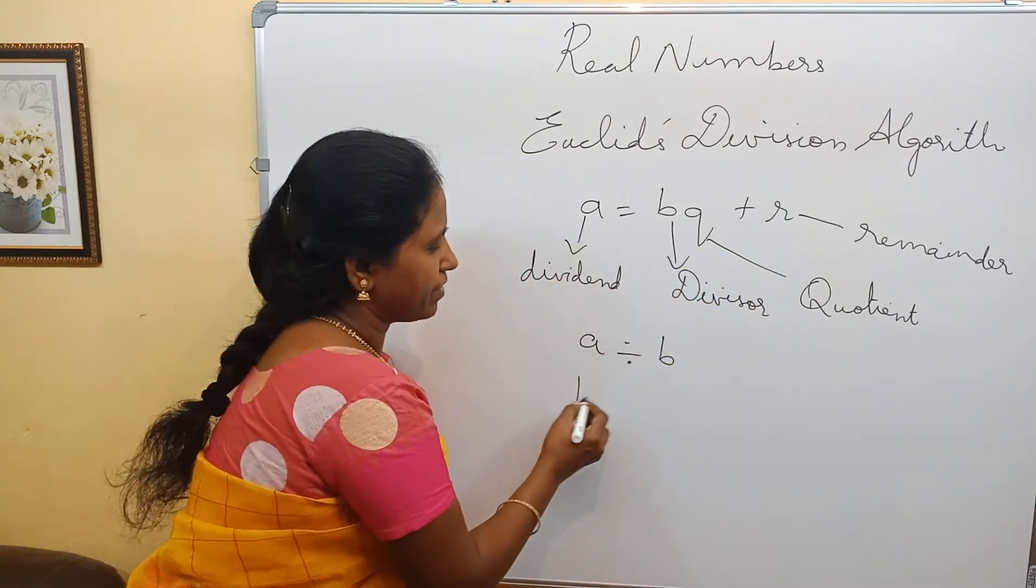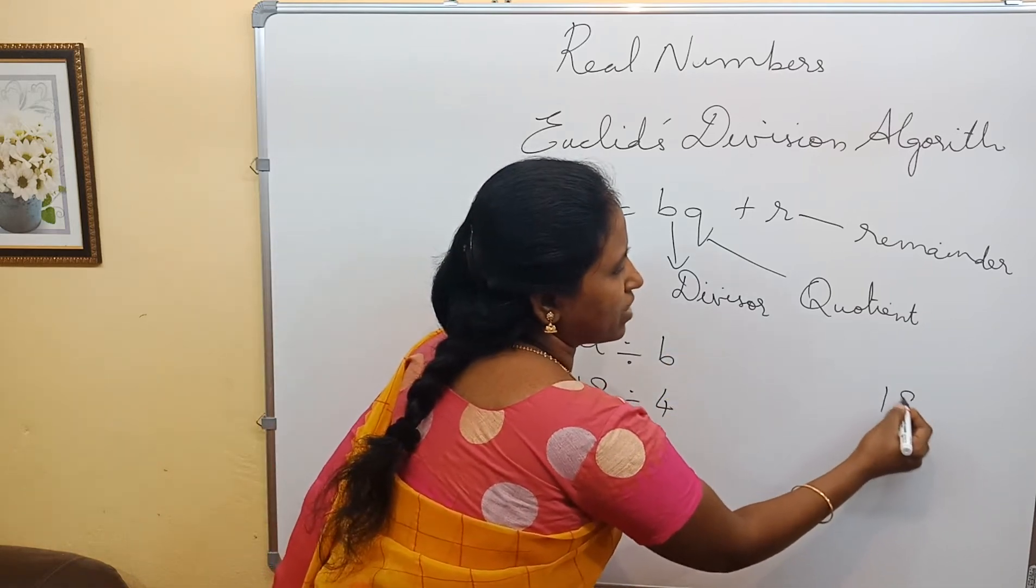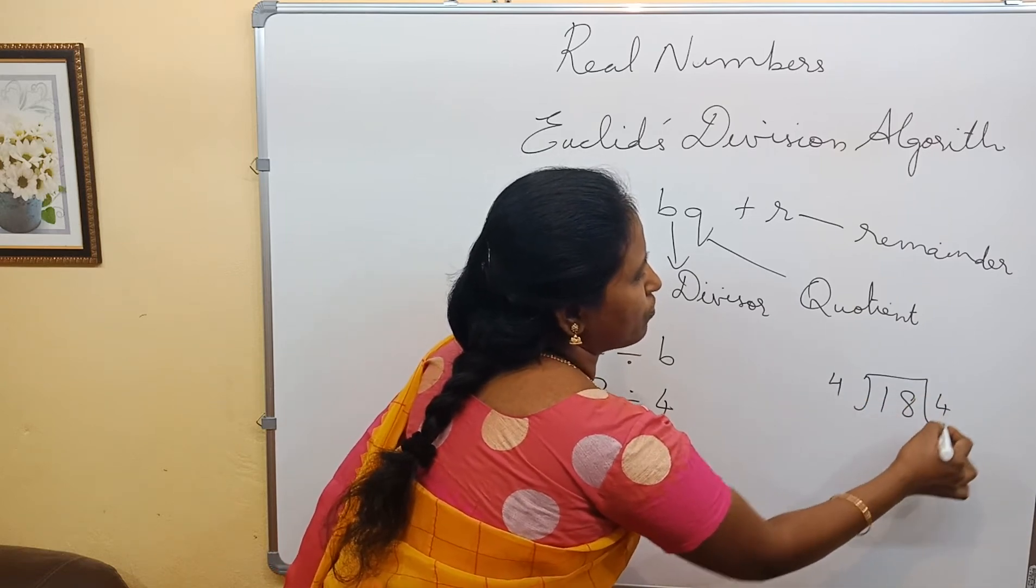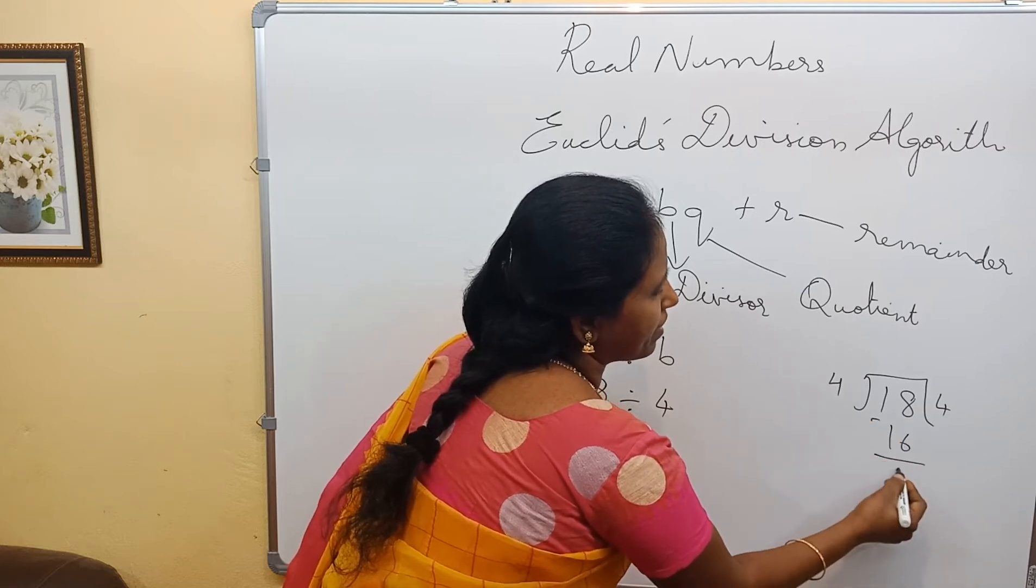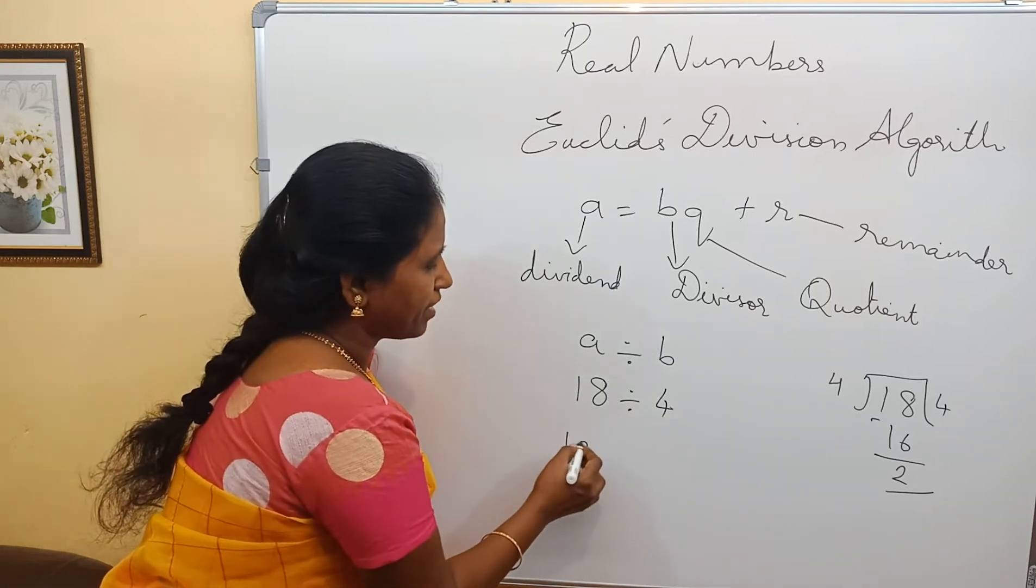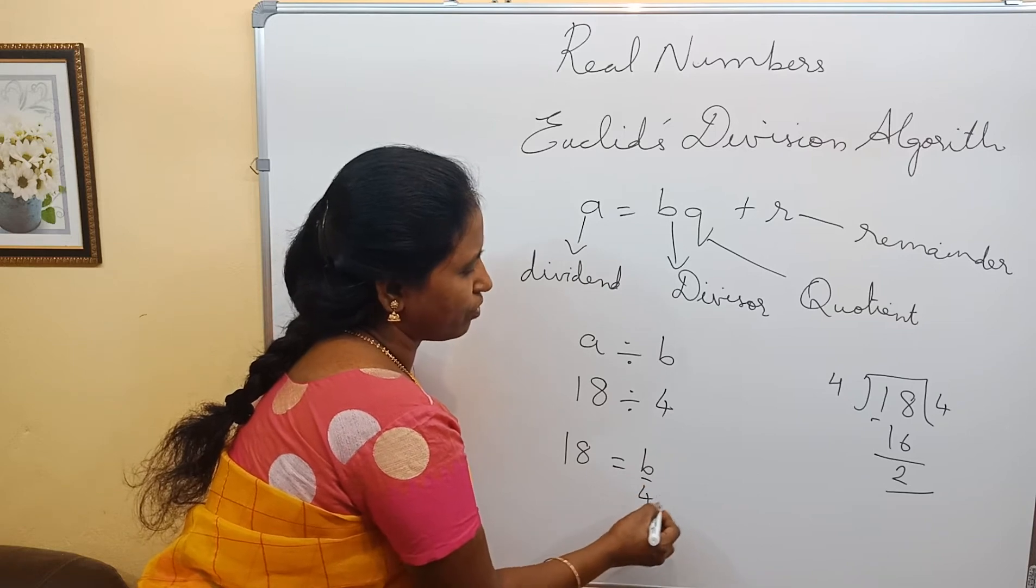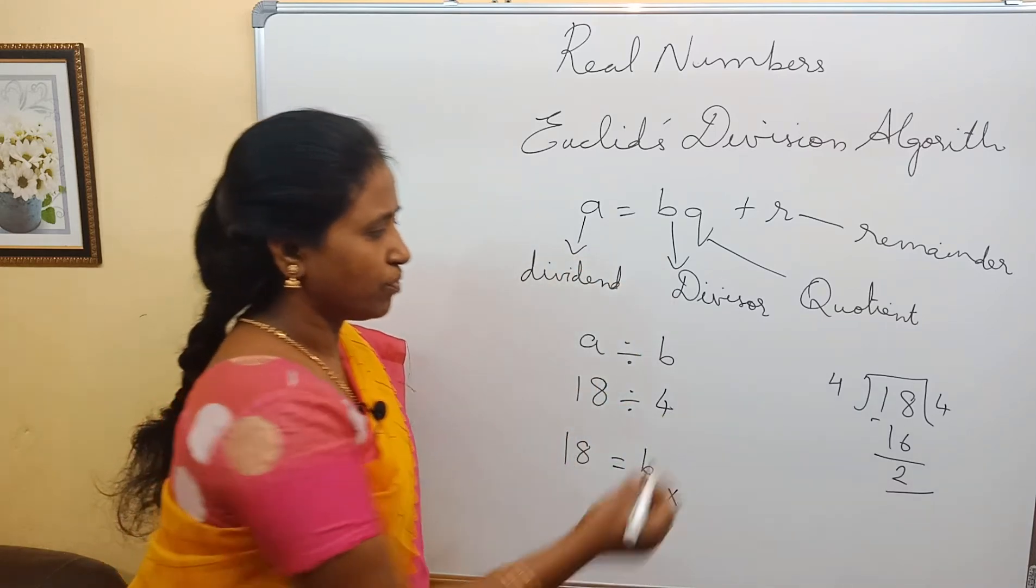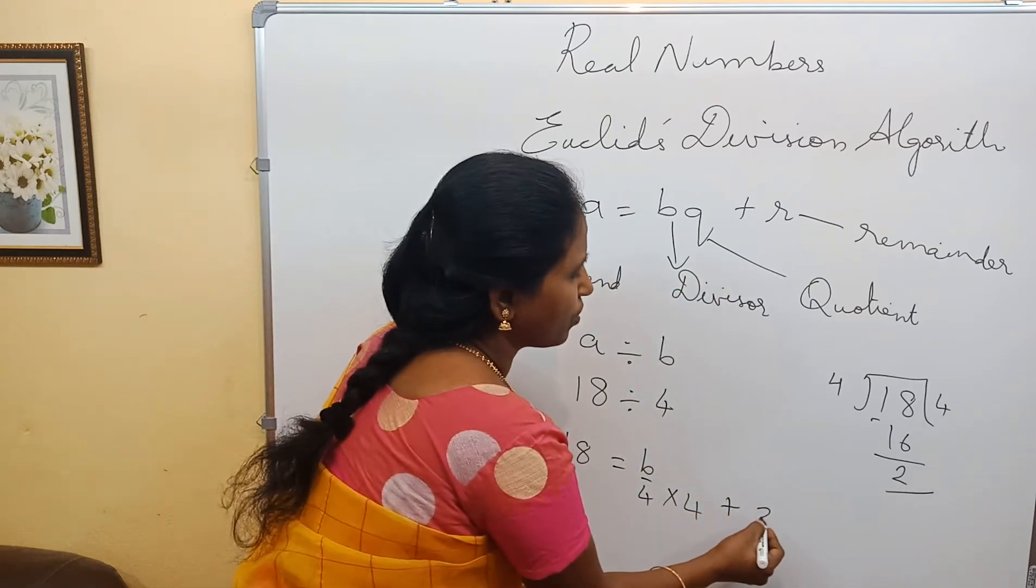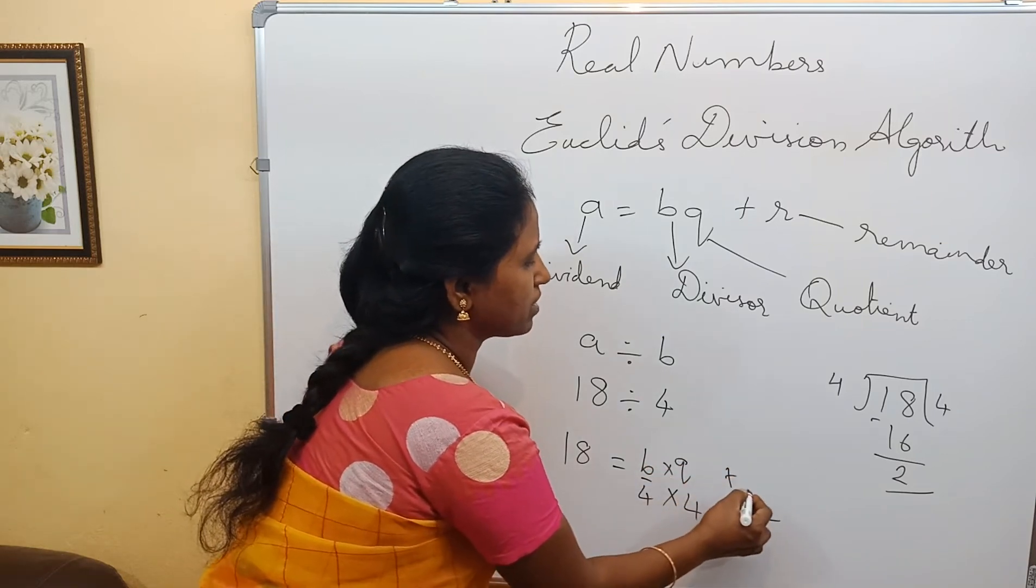Let's have an example. If it is 18 divided by 4, 4 times 4 is 16, the remainder is 2. So how would we write? 18 equals B, that is 4, into Q which is 4, plus the remainder 2. A equals B into Q plus R.